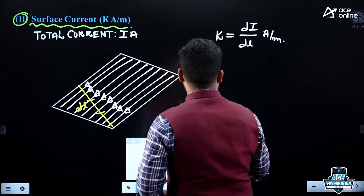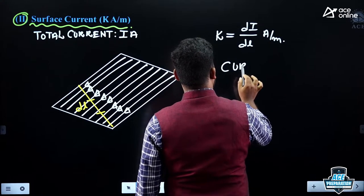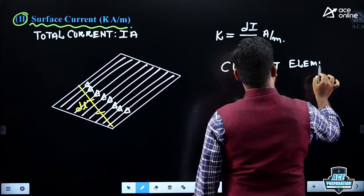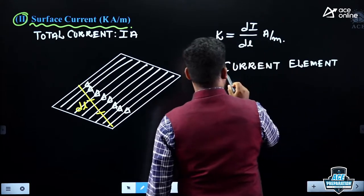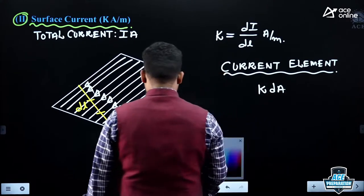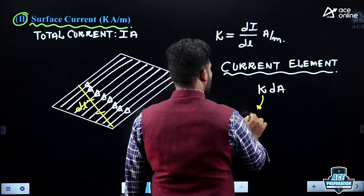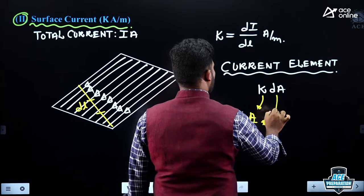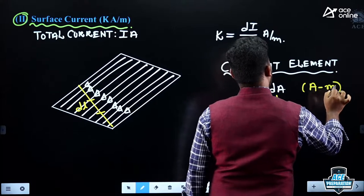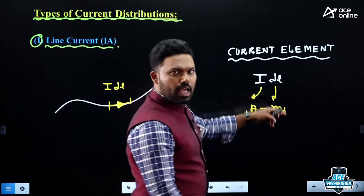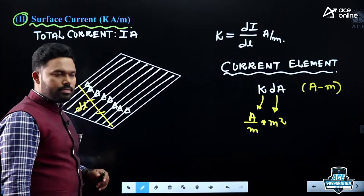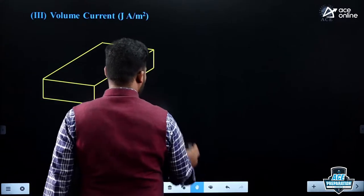For sheet current, the current element is K·dA. K is in ampere per meter and dA is in meter squared, so the current element units are again ampere-meter. Now the third type is volume current, represented by J, with units of ampere per meter squared — the current is flowing throughout a volume.